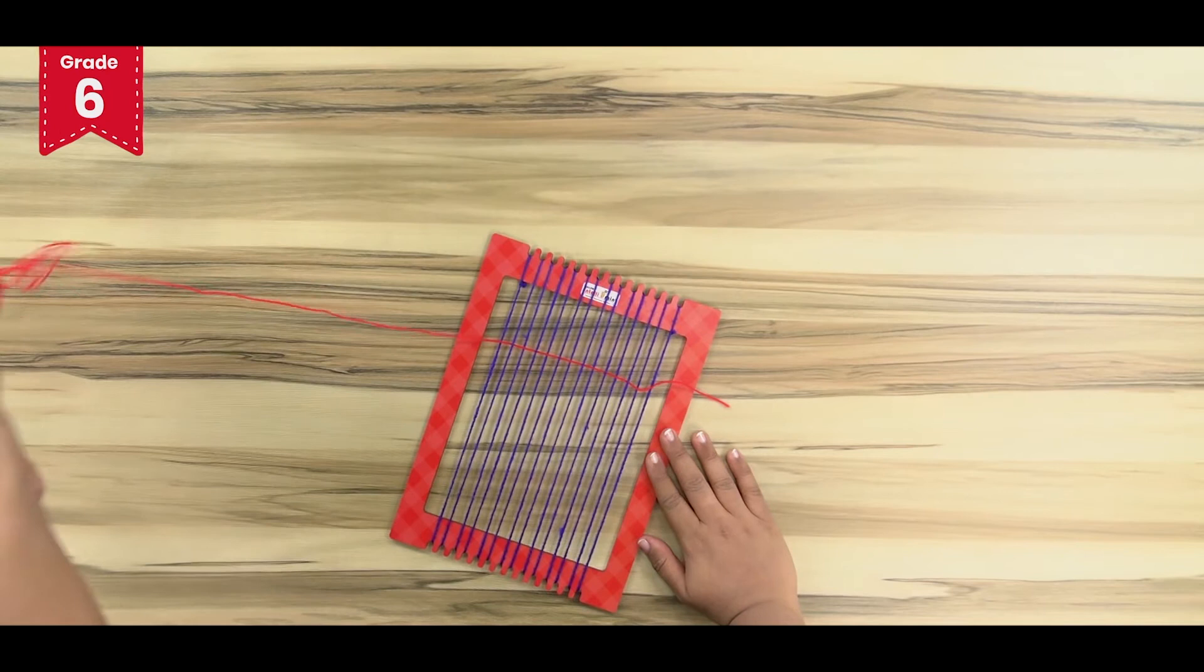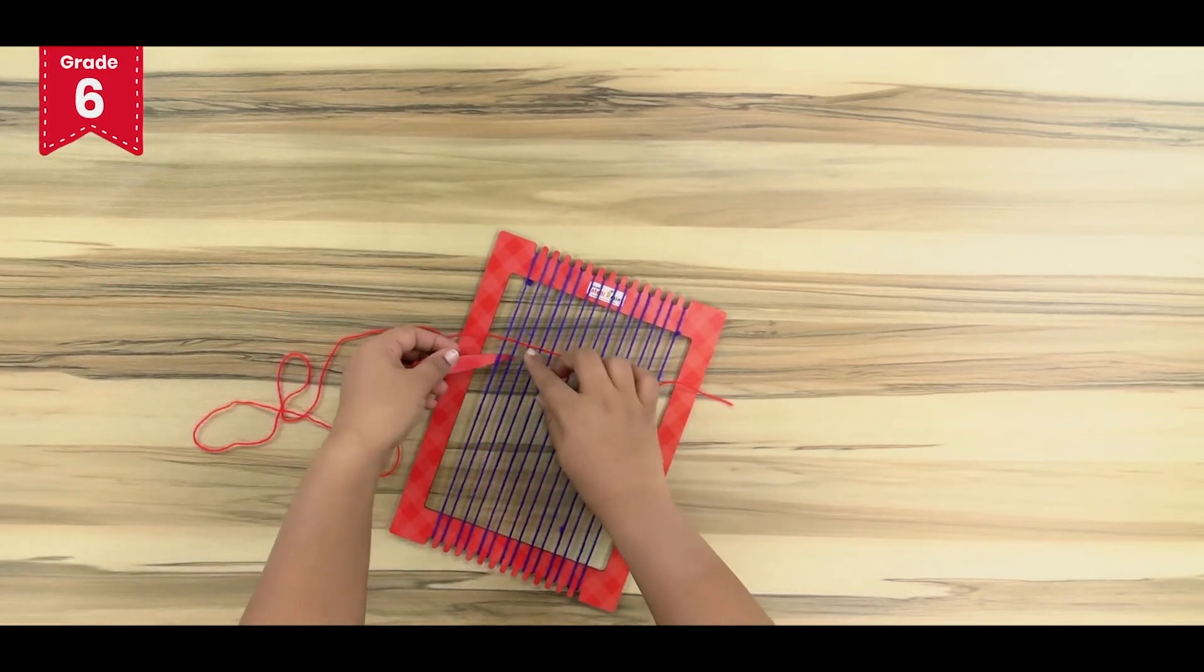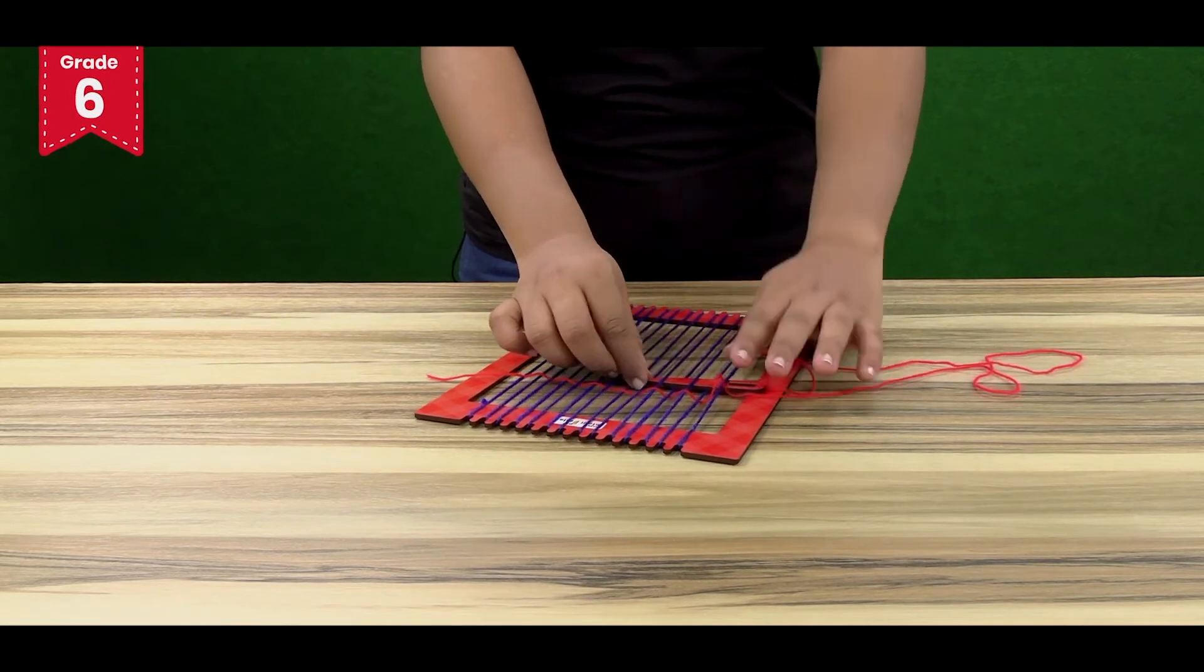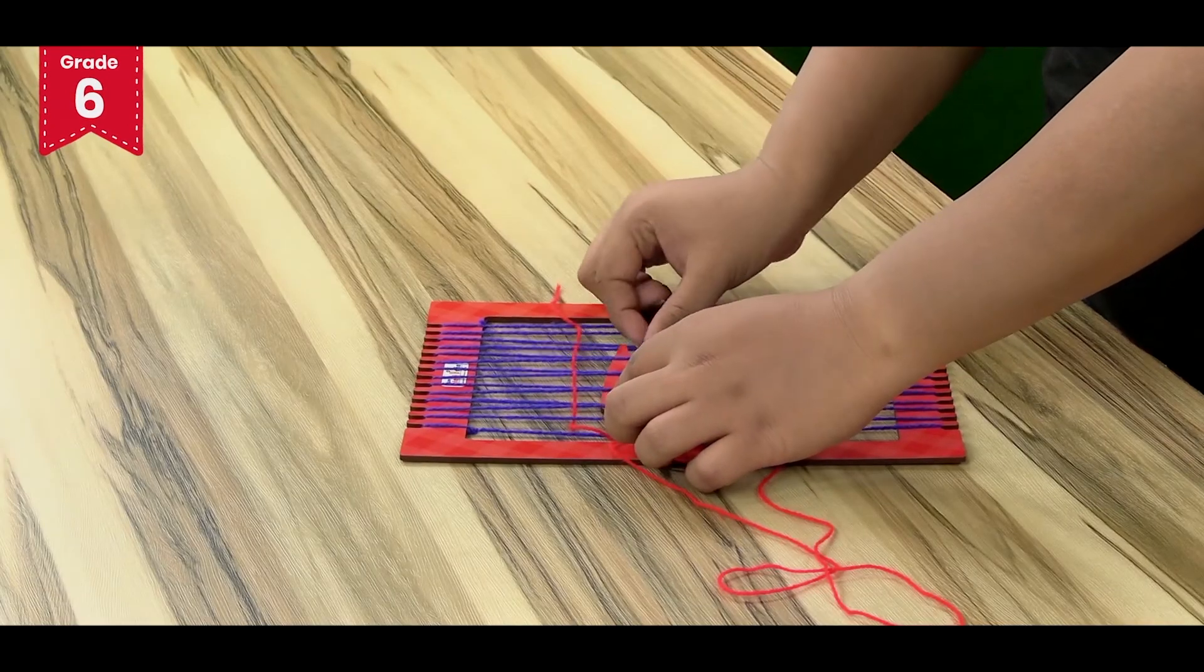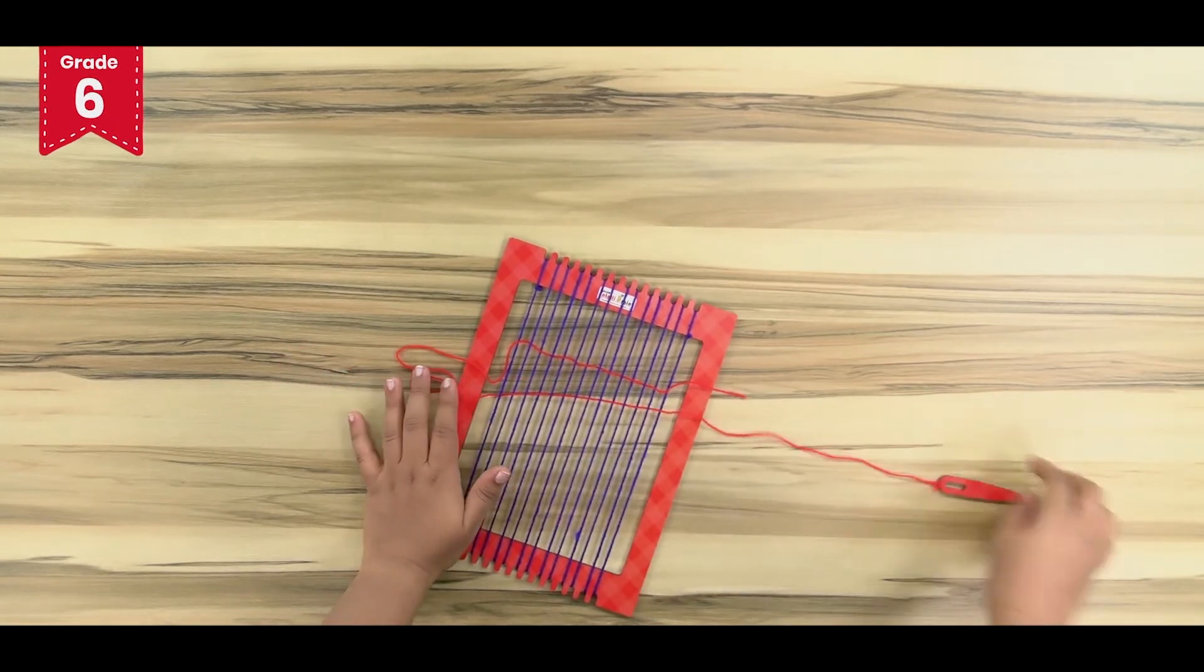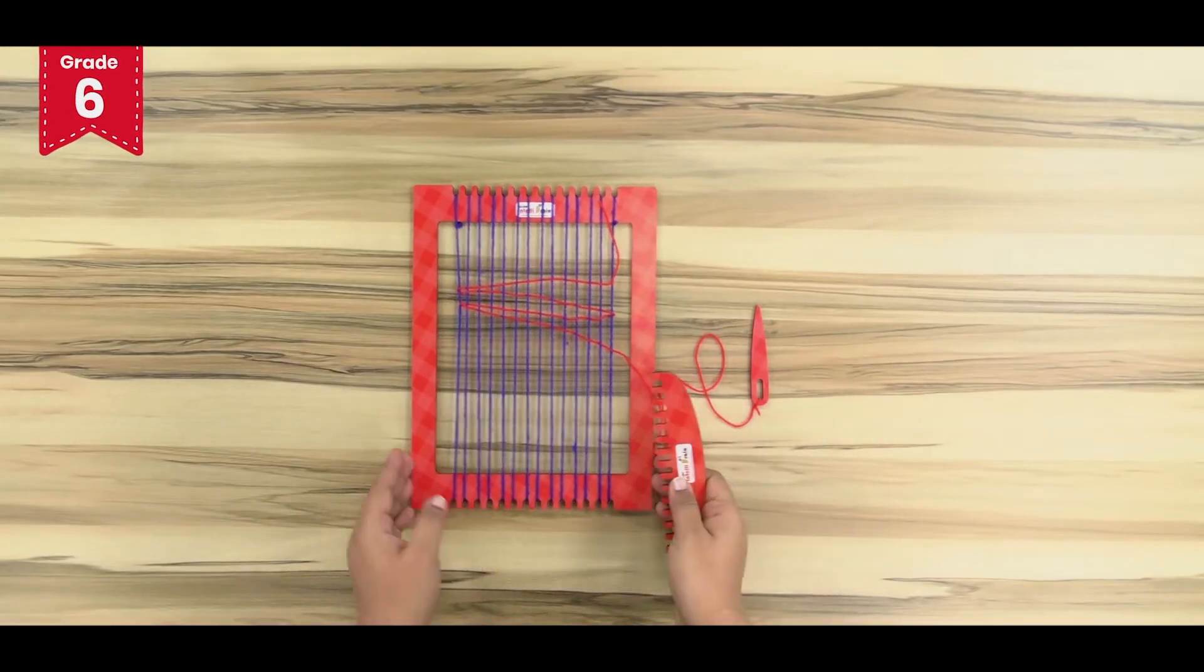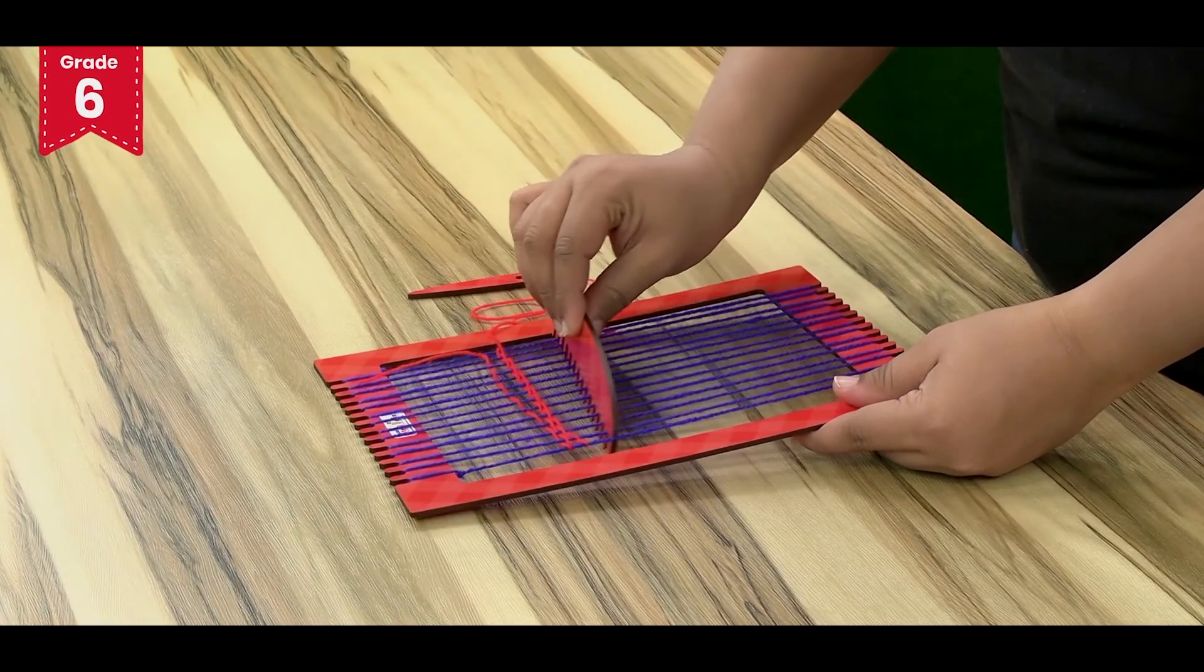Now again, turn the needle and make a similar crisscross pattern. Now comb the weft yarn in between like this to shift it to one side.